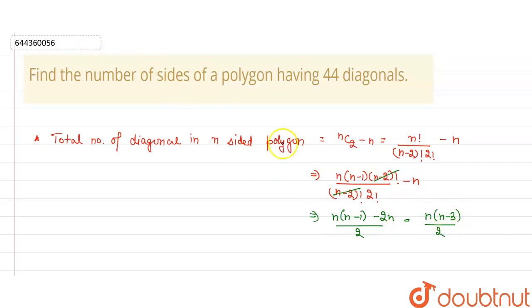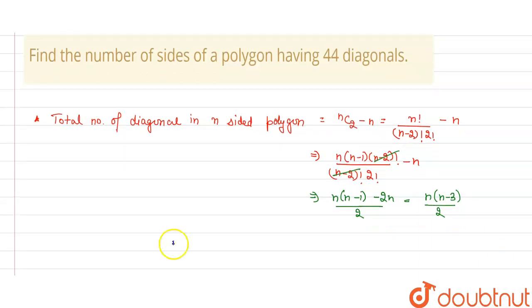Total number of diagonals, as we have given, equals 44. So we can write 44 equals n(n minus 3) divided by 2. We will simplify it and get n squared minus 3n minus 88 equals 0.